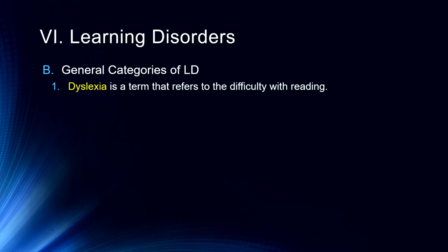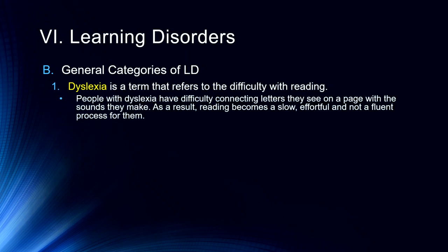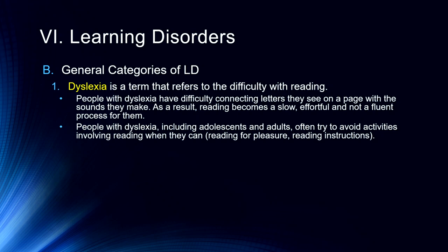Now for specific categories of learning disorders. Dyslexia refers to difficulty with reading. The stereotype is that individuals see letters backwards, but it's really a letter and word recognition problem associated with using context to drive perception. People with dyslexia have difficulty connecting letters they see on a page with the sounds they make — a disconnection between types of sensory processing. Reading becomes a slow, effortful, and non-fluent process. People with dyslexia often try to avoid reading activities — they won't read for pleasure or read instructions — because of that sensory disconnection.